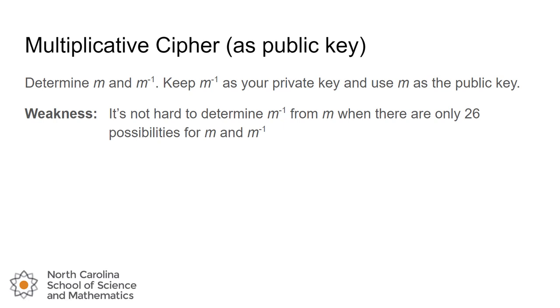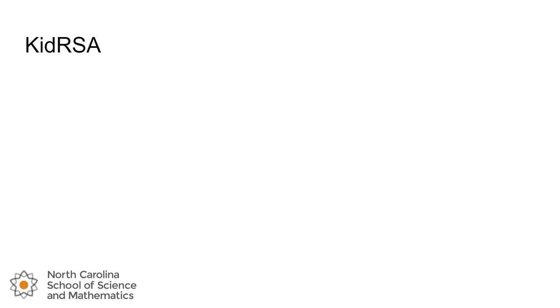KID RSA is named that way because it shares similar principles with the real RSA algorithm we'll learn about shortly, but it's a simpler version — kind of like a child's version. It's a lot like our multiplicative cipher encryption system; we're just going to increase the number of possibilities from 26 out to the millions.